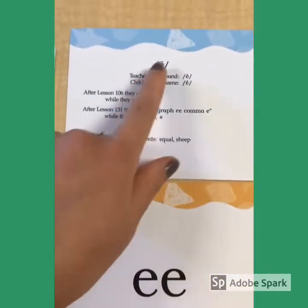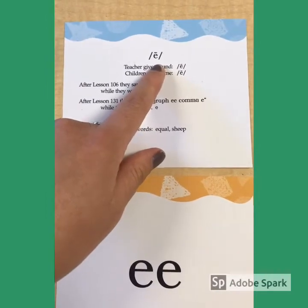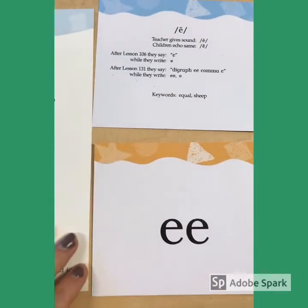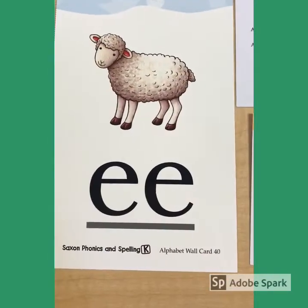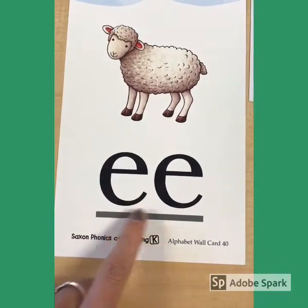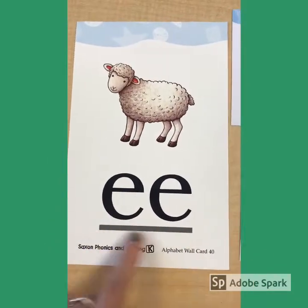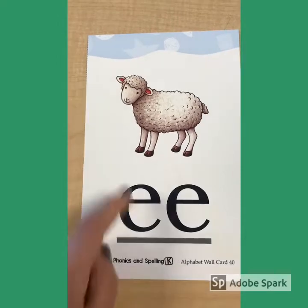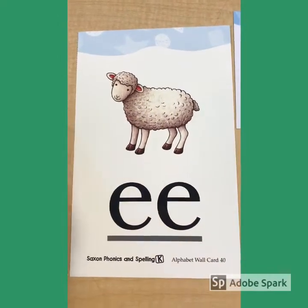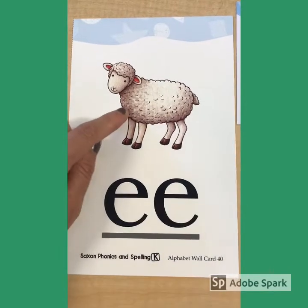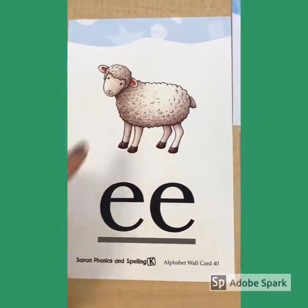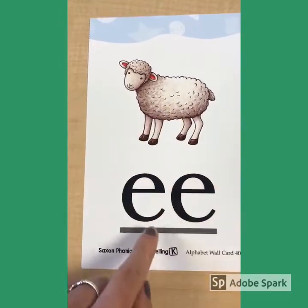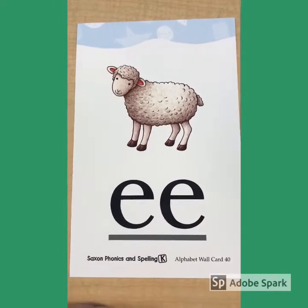It makes the long EE sound. We're going to write it like this: digraph EE, comma E. We also get a new word card. So we have digraph EE — it's underlined because we underline our digraphs to code them. We're going to remember this digraph by this picture. This is a sheep. Sh-eep. This picture is going to help us remember that digraph EE makes the long EE sound, for sheep.